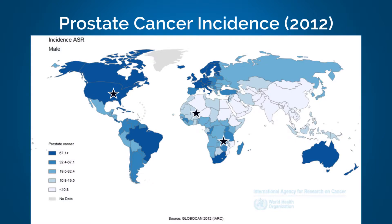This map shows a global incidence of prostate cancer in 2012. There was a high incidence of prostate cancer in western countries, low incidence in sub-Saharan Africa, but a rising incidence in South Africa.